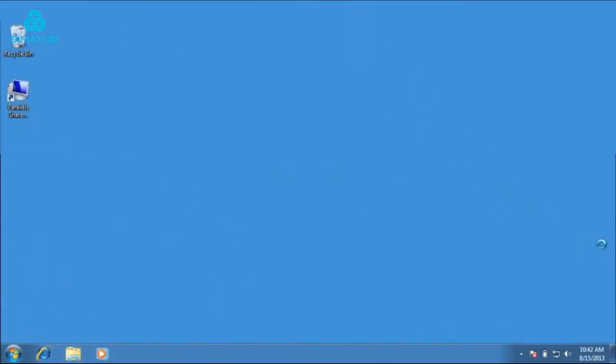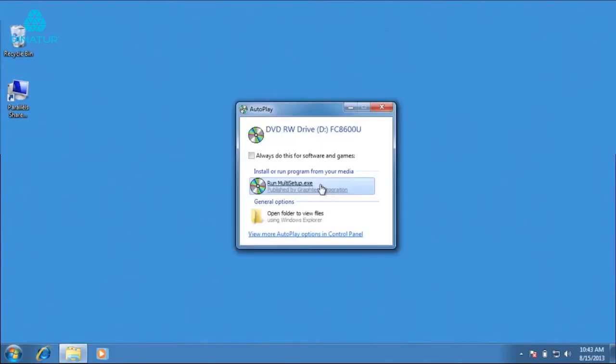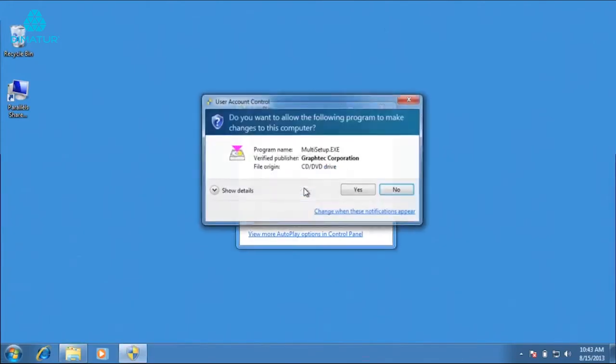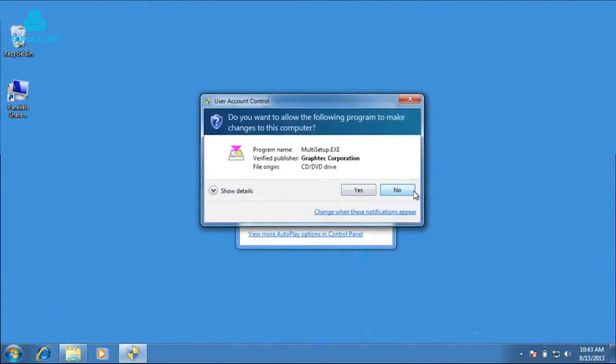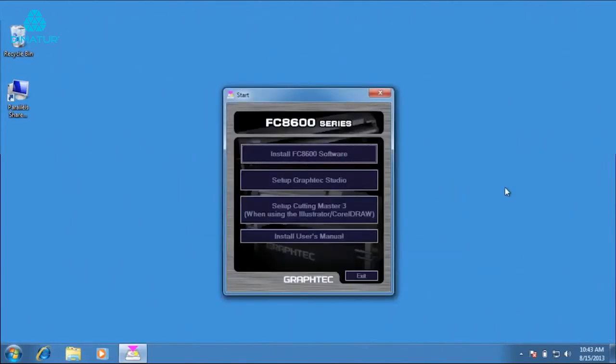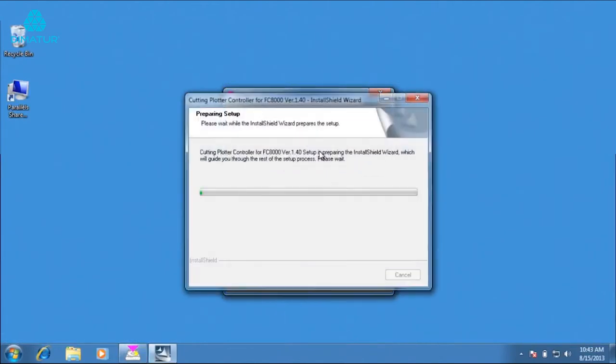Next, we'll install the Graphtec software. We won't install all of it, since we'll cover this in later lessons. To start, insert the FC8600 DVD into the DVD drive. Click Run Multisetup.exe. You may get this user account control message, asking if it is okay to install the Multisetup application. Click Yes. This will open the FC8600 software installation application. Click on the Install FC8600 software button, and follow the step-by-step process.